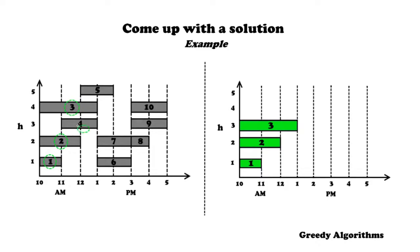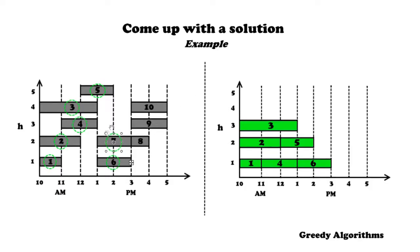The next lecture with the earliest starting time is lecture 4. We get the lecture hall that becomes available first, which is lecture hall 1. We check whether it's compatible with lecture 4 — it is — so we schedule lecture 4 into lecture hall 1. Then for lecture 5, the earliest-available hall is lecture hall 2, and it is compatible, so lecture 5 goes into lecture hall 2. Lectures 6 and 7 come next: lecture 6 is scheduled into lecture hall 1, and lecture 7 into lecture hall 3.